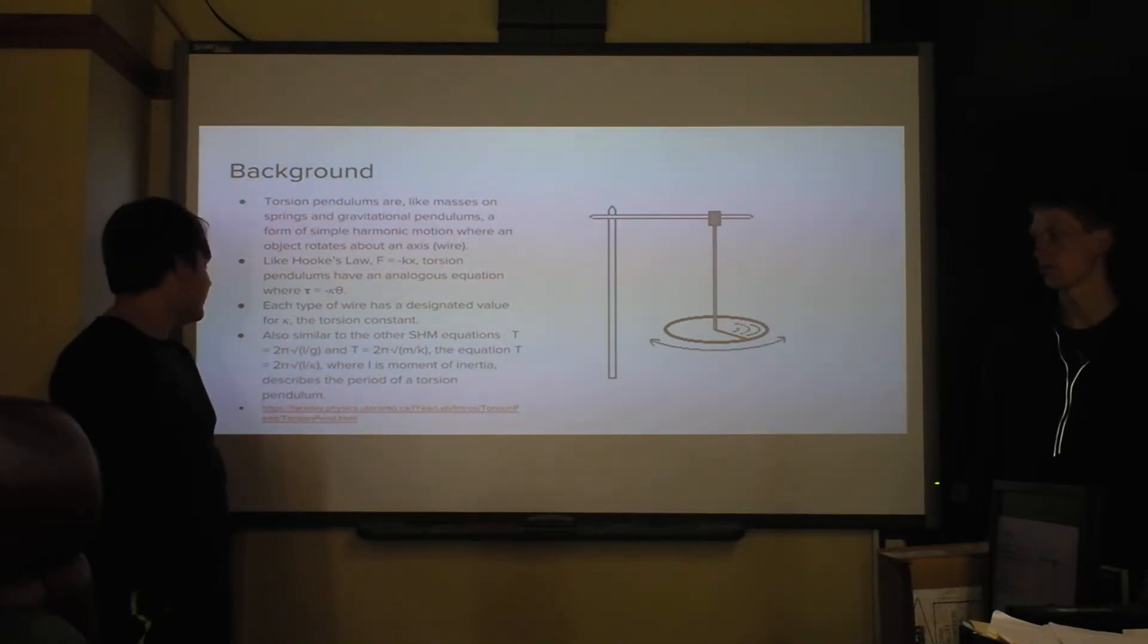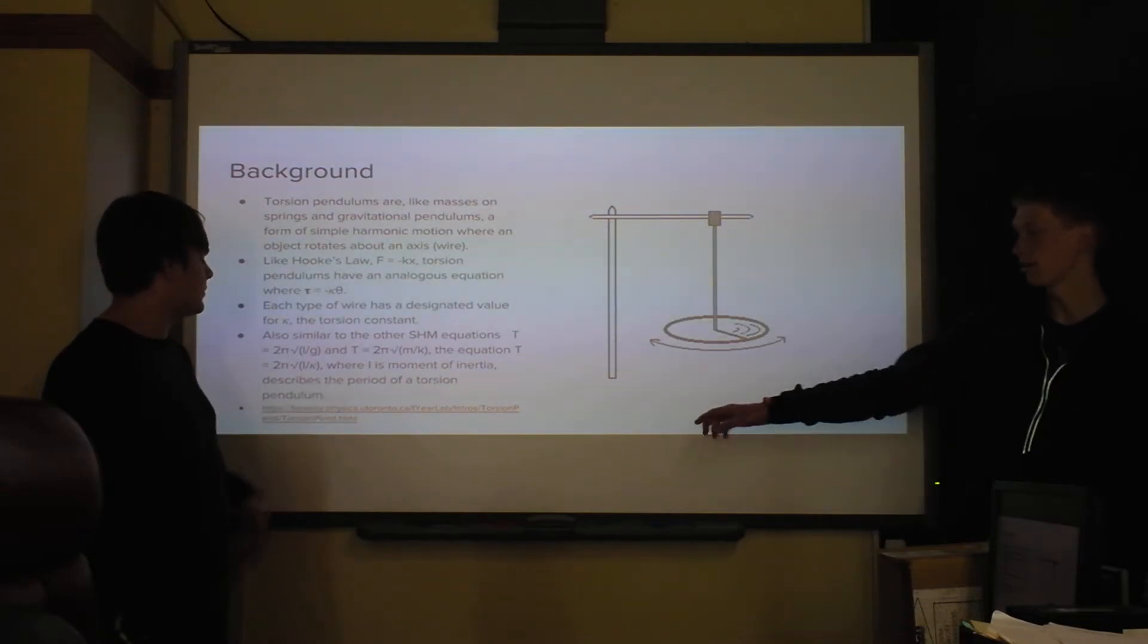Also similar to the other simple harmonic motion equations, T equals 2π√(L/G) and T equals 2π√(M/K). The equation T equals 2π√(I/κ), where I is moment of inertia, describes the period of a torsion pendulum.